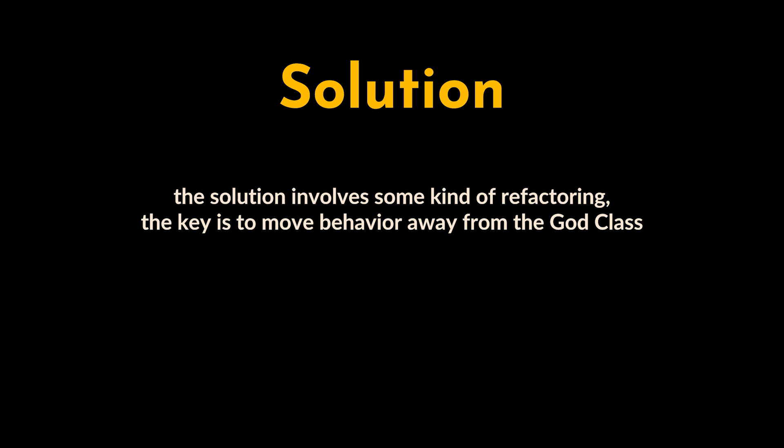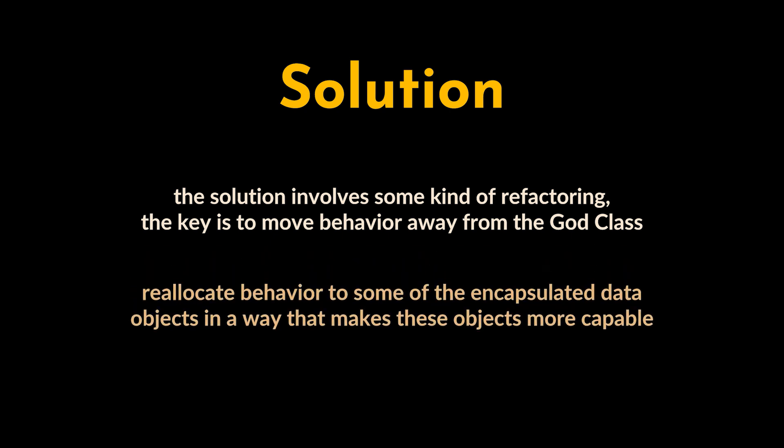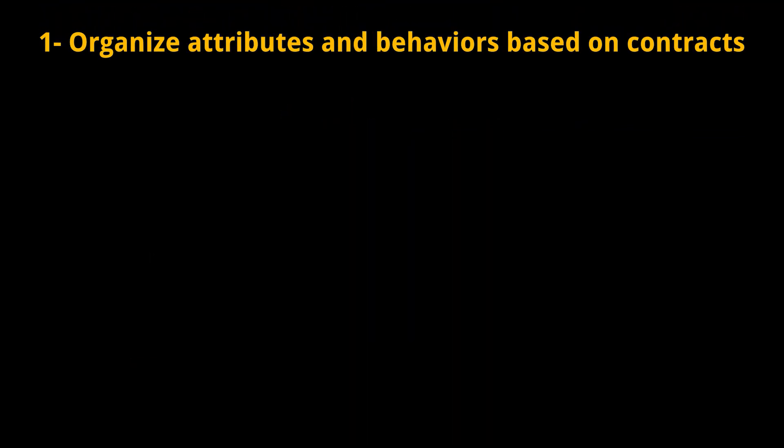But how can we solve this problem? If our application already contains a God Class, how can we handle this architectural challenge and improve the overall design? As with most anti-patterns, the solution involves some kind of refactoring. The key is to move behavior away from the God Class. It may be appropriate to reallocate behavior to some of the encapsulated data objects in a way that makes these objects more capable. The method for refactoring responsibilities is as follows: the first step is to organize attributes and behaviors based on contracts, ensuring these contracts are cohesive and centered around a shared focus or function within the broader system.